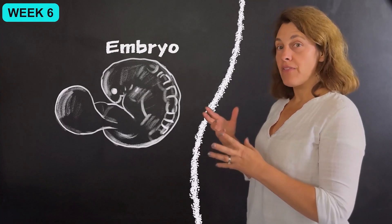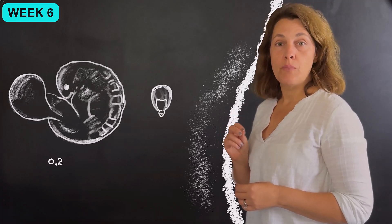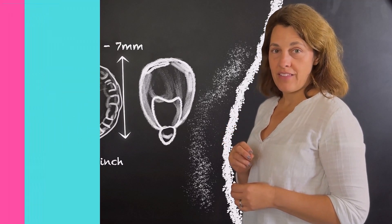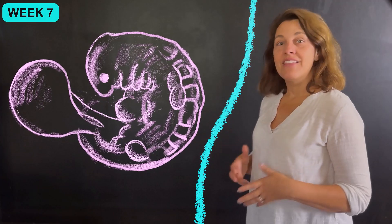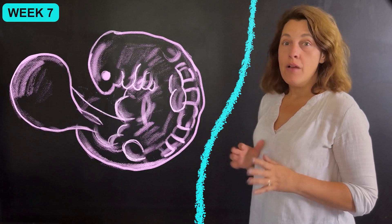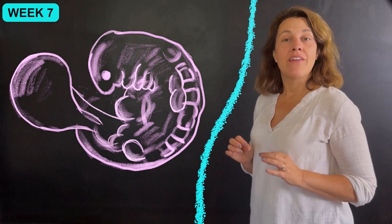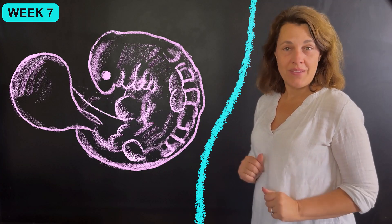The embryo at this point is about the size of a corn kernel, measuring approximately 0.2 to 0.3 inches or 5 to 7 millimeters in length. At seven weeks, the ears, eyes, nose, and mouth are becoming more distinct, but they're not yet fully formed. The early stage of the nostrils develop and their retinas are formed this week as well.